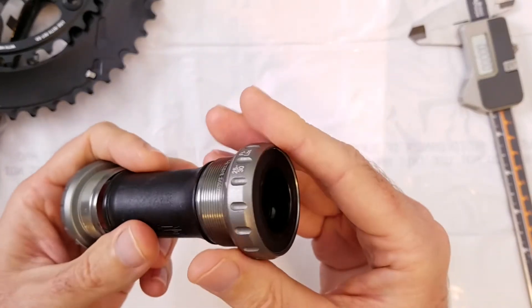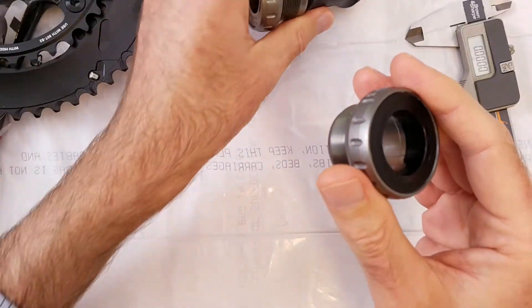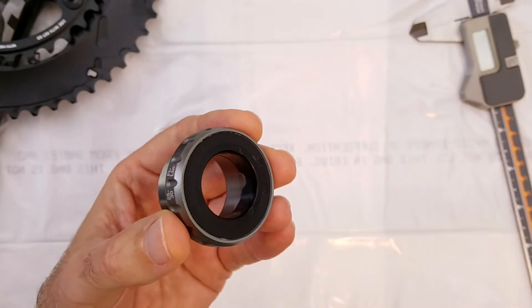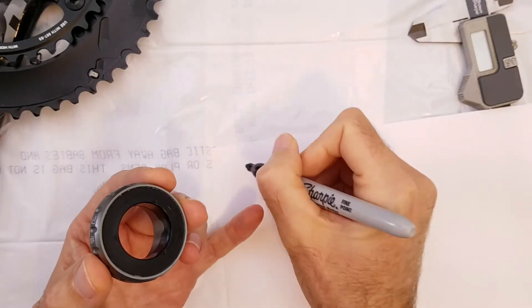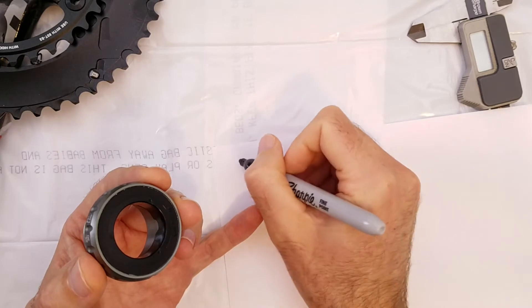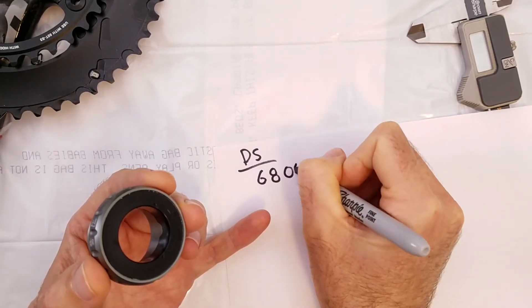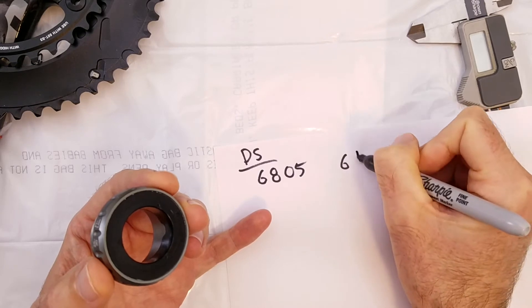So let's take a look at the drive side bearing first. The drive side uses a standard size of industrial bearing. The designation for it is 6805, also called a 61805.